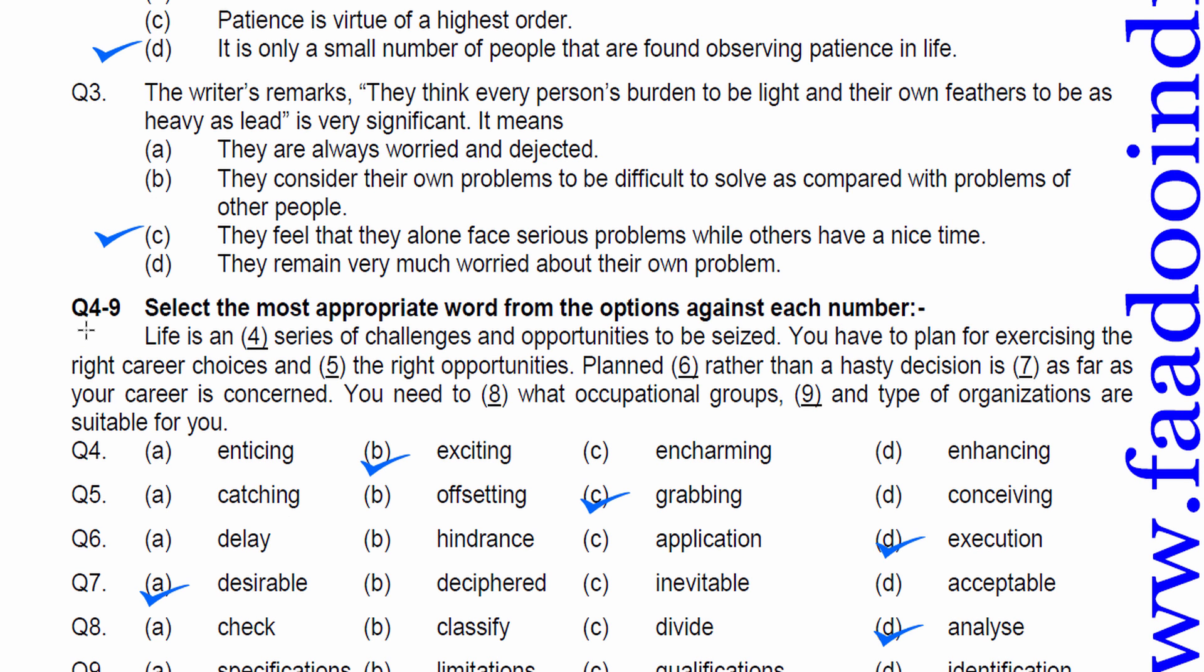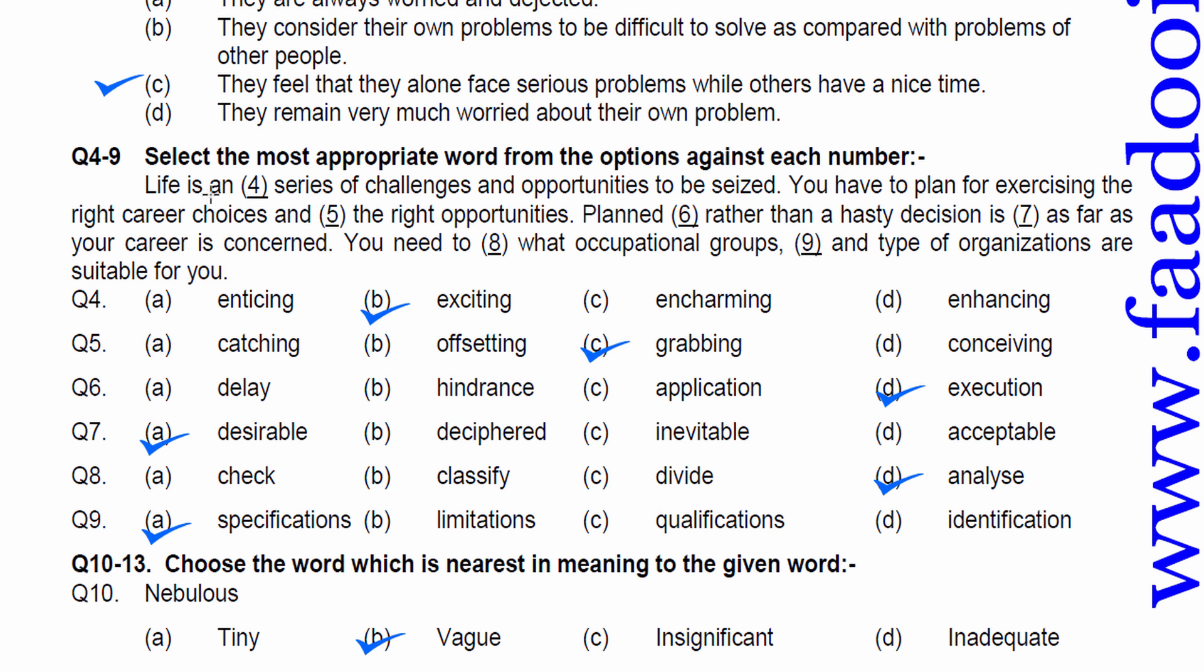Question 3. The writer's remarks, they think every person's burden to be light as their own feathers to be as heavy as lead is very significant. It means here, every person's burden to be light as compared to ours means people ponder, have problems in life. Therefore, option C is correct.